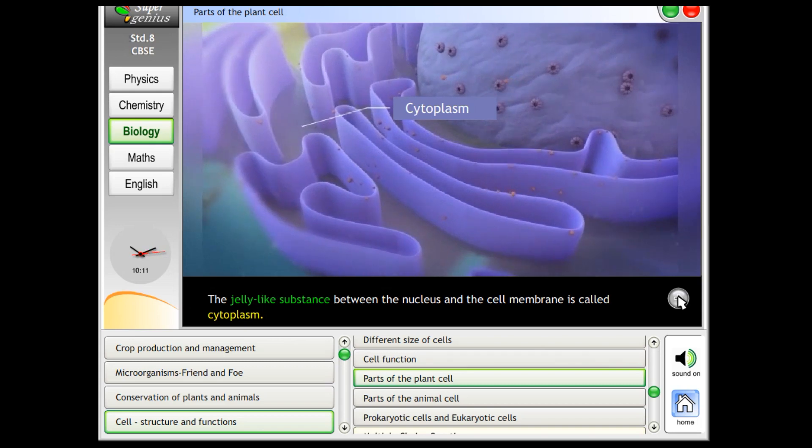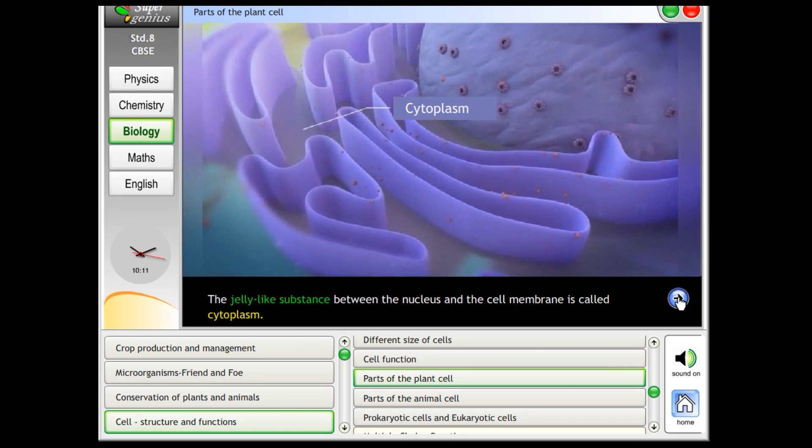The jelly-like substance between the nucleus and the cell membrane is called cytoplasm.